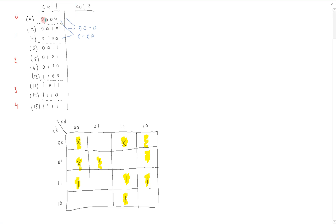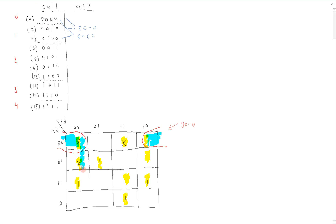So if we look at 0000 and 0010, we saw that they form 00-0. On the K-map, we basically expanded that square to encompass both of these, which gives us this encirclement corresponding to 00-0. And the next one — 0000 expanding to 0100 — gives another encirclement corresponding to 0-00. For each value that we were able to pair off, we're going to check it off. The ones that formed another pair get highlighted.